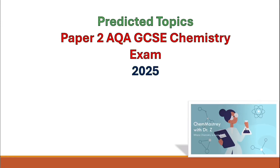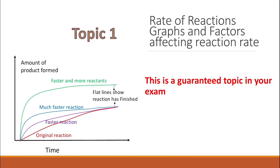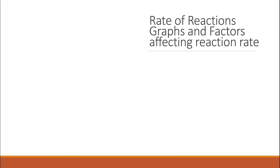I'm going to share my predicted topics for Paper 2 AQA GCSE Chemistry Exam 2025. The first topic is Rate of Reaction Graphs and Factors Affecting Reaction Rate. This is a guaranteed topic in your exam — you will never find a Paper 2 exam without this topic.